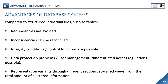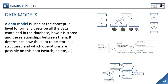In addition, databases with a defined user management help to avoid data protection problems by protecting the data from unauthorized access through differentiated access regulations. Depending on the user's access, corresponding display variants can be provided for each purpose, which show the relevant information in different sections — the so-called views — from the total amount of all stored information. A data model is used at the conceptual level to formally describe all the data contained in the database, how it is stored and the relationships between them. It determines how the data to be stored is structured and which operations are possible, like search or delete.